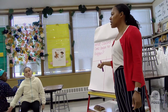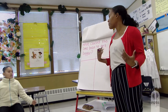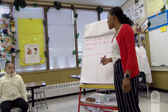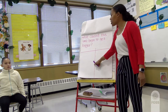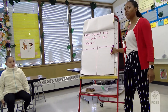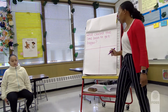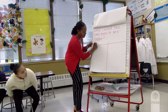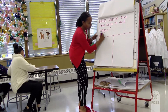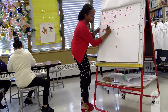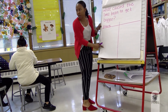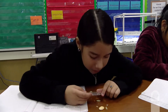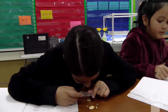Teacher: Sometimes scientists observe effects — things that have changed. So I want you to make a T-chart on page 27, and write down the effects. What do you observe that changed? Student: When you look really close through the magnifying glass, it looks cool.